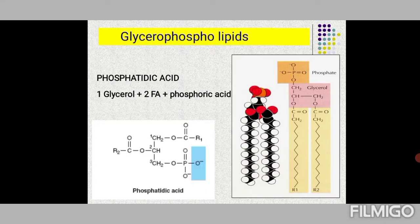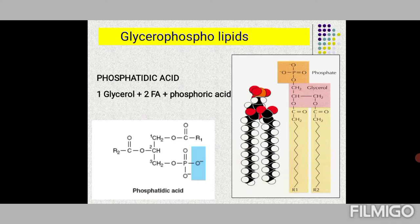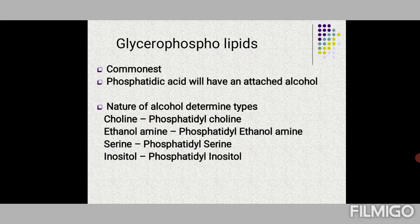In glycerophospholipids, the basic plan is phosphatidic acid: a glycerol with two fatty acids attached to two carbons through dehydration synthesis, and the third carbon attached to a phosphate molecule. In glycerophospholipids, this phosphate has an attached alcohol. Depending on the type of alcohol — choline, ethanolamine, serine, or inositol — they are classified and named accordingly, giving phosphatidylcholine, phosphatidylethanolamine, phosphatidylserine, phosphatidylinositol, and so on.